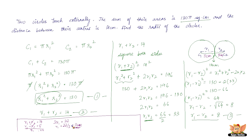Since r1 = 11 centimeters and the sum of radii is 14 centimeters, r2 must be 3 centimeters — 11 plus 3 equals 14. That's this problem solved. See you in the forthcoming videos with more problems based on circles.